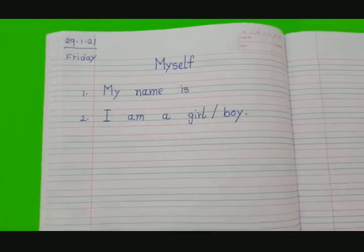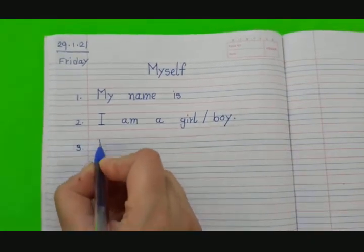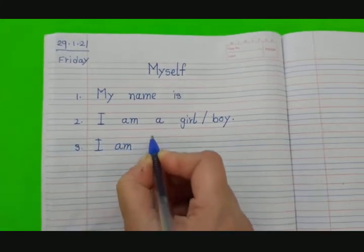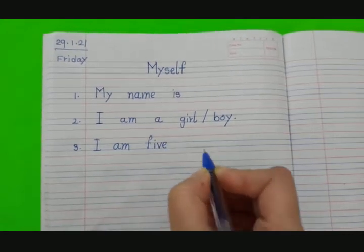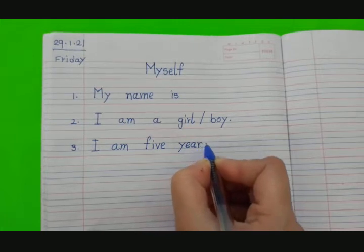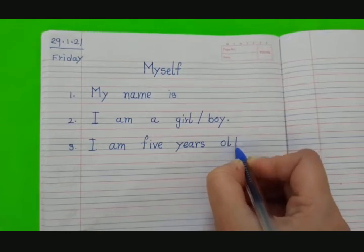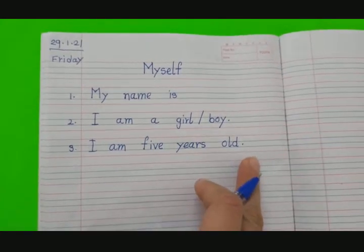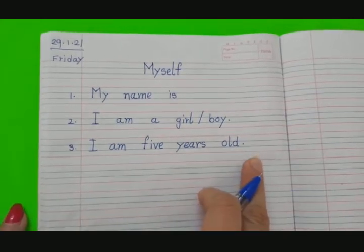Now the next sentence, number 3: I am five years old — F-I-V-E, Y-E-A-R-S, O-L-D. Full stop. I am 5 years old. Everyone will write the same sentence.